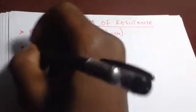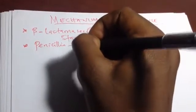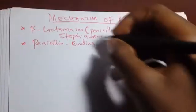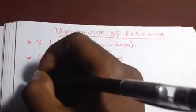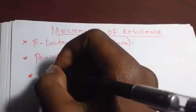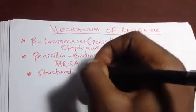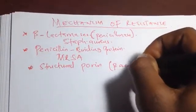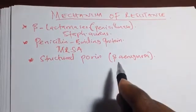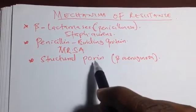Some bacteria change the structural function of the penicillin binding protein. When the PBP is changed, the penicillin can no longer recognize and bind it, so the function of the penicillin is altered. The example of this is methicillin-resistant Staphylococcus aureus, also known as MRSA. Some bacteria change the protein structure of the porin channel through which penicillin enters the bacterial cell. The most important example is Pseudomonas aeruginosa, which develops resistance by changing the structural function of the porin channel.